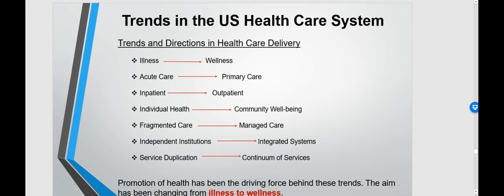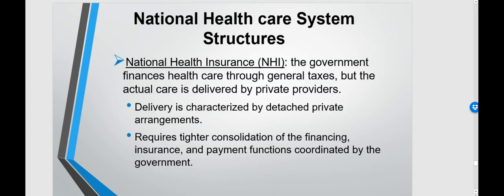The last area I want to touch on is national healthcare system structures. There are three covered in the textbook. First is NHI — National Health Insurance, found in Canada — where the government finances healthcare through general taxes but the actual care is delivered by private providers. Delivery is characterized by detached private arrangements, and it requires tighter consolidation of financing, insurance, and payment functions, all coordinated by the government.